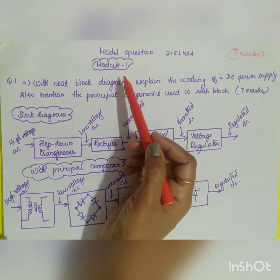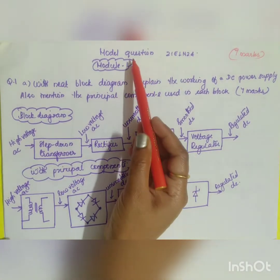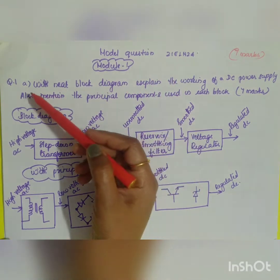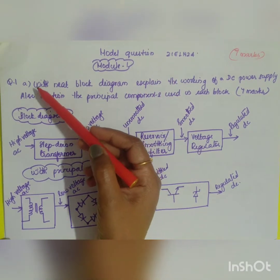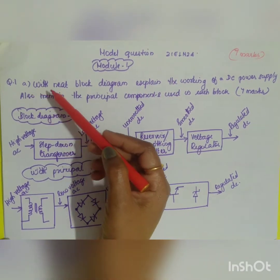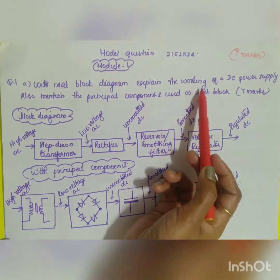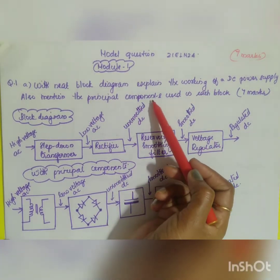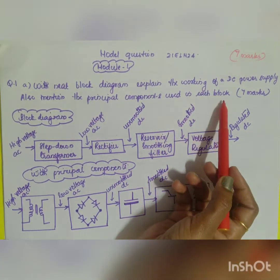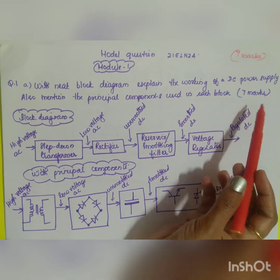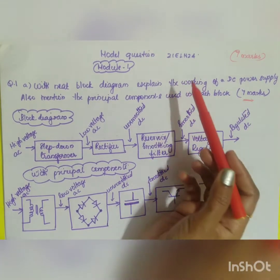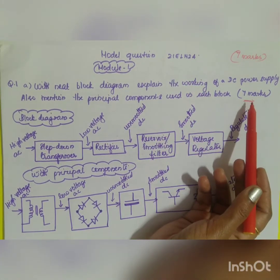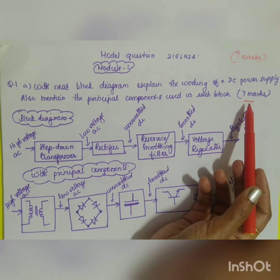The first question in Module 1 of the model question paper 21 ELN 24 is Question 1(a): with a neat block diagram, explain the working of a DC power supply and also mention the principal components used in each block. It is asked for seven marks.